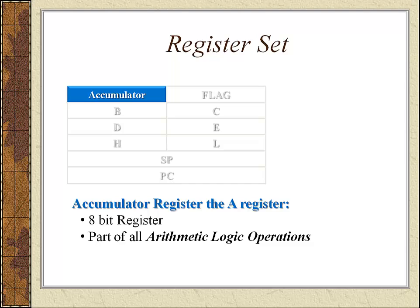First we talk about the accumulator. The accumulator register is an 8 bit register which holds one of the operands of all arithmetic and logic operations. This means that for any arithmetic and logic operation the 8085 carries out, one of the operands is held inside the accumulator register, and after the operation is completed the result is also placed inside the accumulator register. So it has a special status and that is why it is called the accumulator.